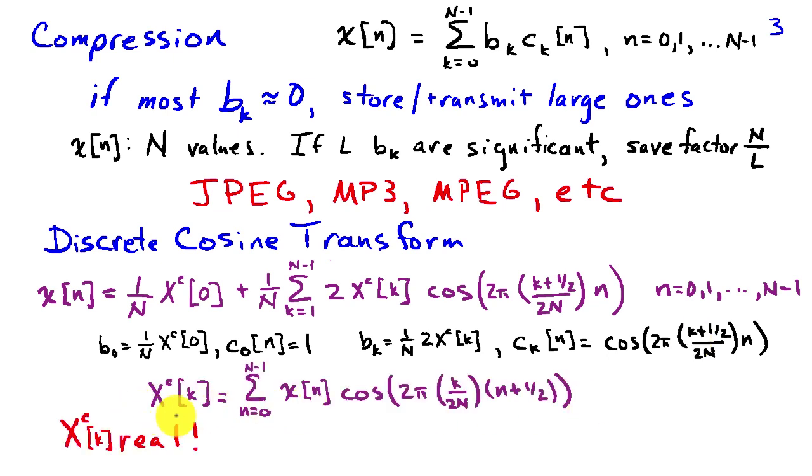Now there's a fairly simple expression for finding the coefficients, the x sub c of k. And that is we just sum up the values of the time signal multiplied by a cosine of frequency k over n. And compared to the discrete Fourier transform, everything in these expressions is real value. So these coefficients are real value. One does not have to work with complex numbers.